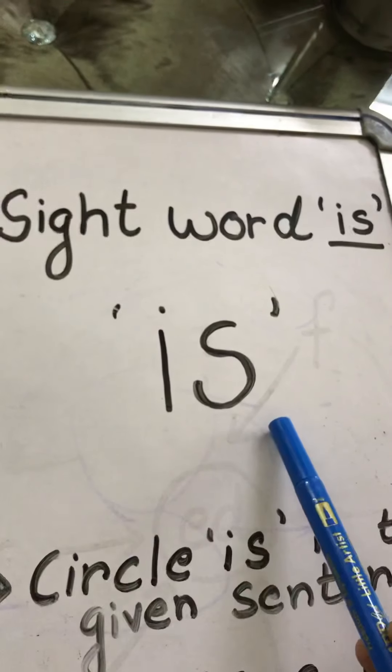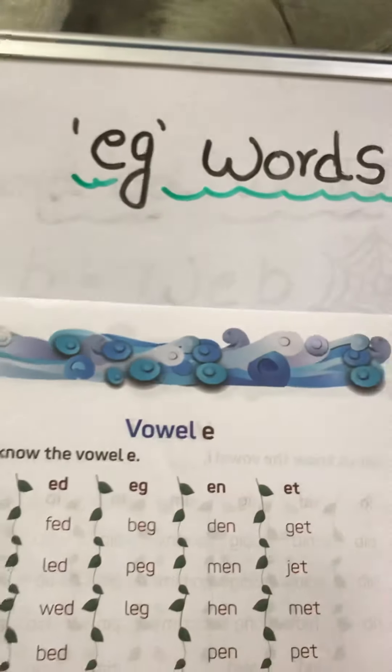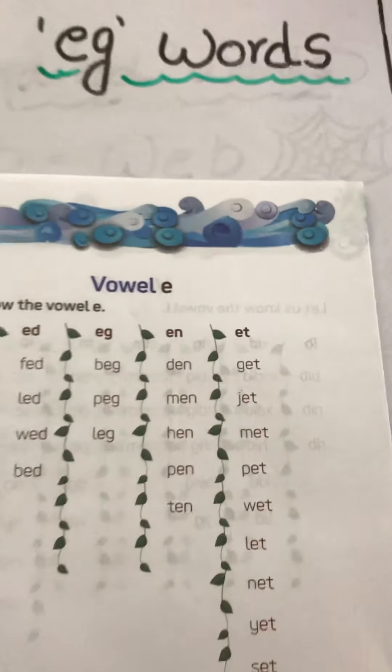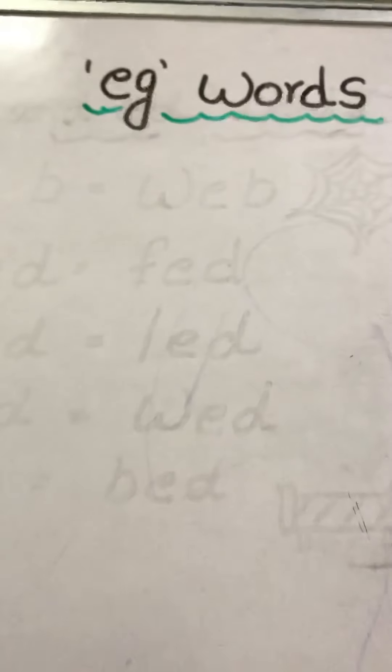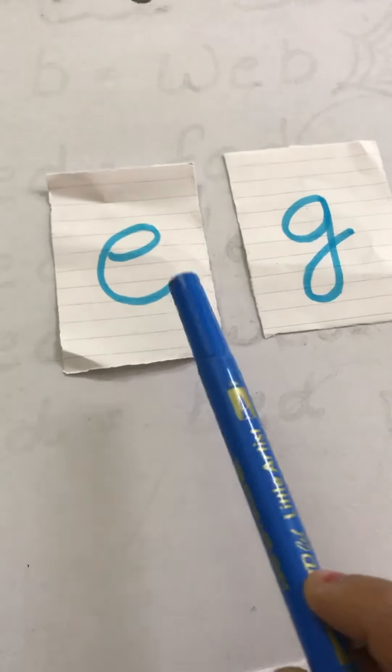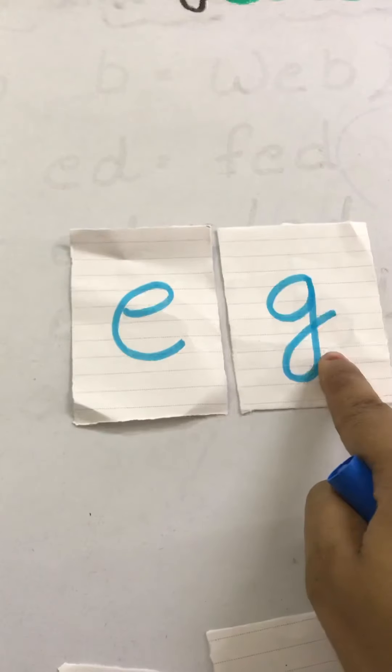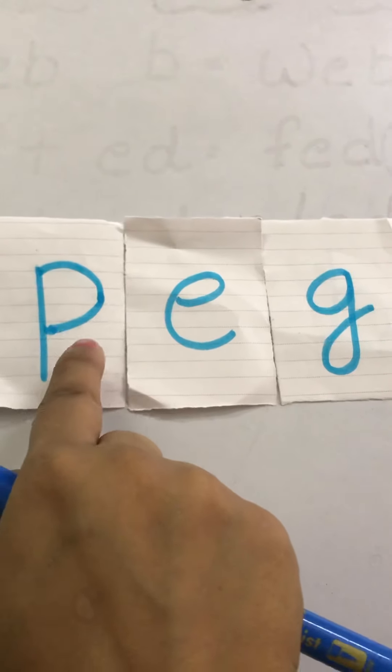Okay, so today we will study the sight word Is and Egg words. Let's start. So kids, what are these letters? This is E and the sound of E is E, and this is G and the sound of G is G. When we combine both of them, it will become Egg. If I add one more letter — P — the sound of P is P, so P, Egg — Peg.